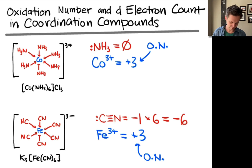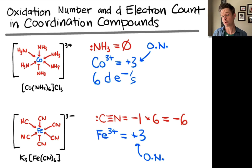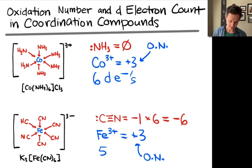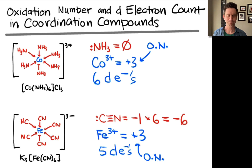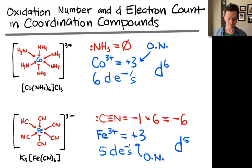So this cobalt has 6 d electrons, or its d electron count is equal to 6. Iron is right next to cobalt in group 8, and so when neutral it has 8 valence electrons. In the iron 3 plus cation, there are 5 valence electrons remaining, and all 5 are in the d subshell. So the iron here has 5 d electrons. You'll often see this written in an electron configuration format: we refer to the iron center as d5 and the cobalt center as d6.